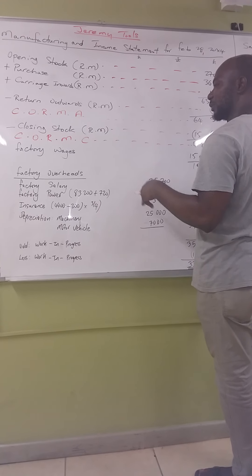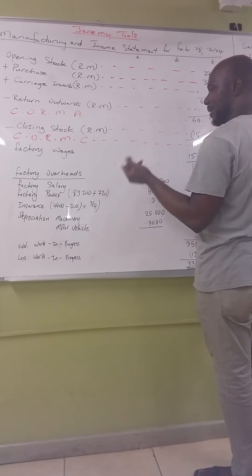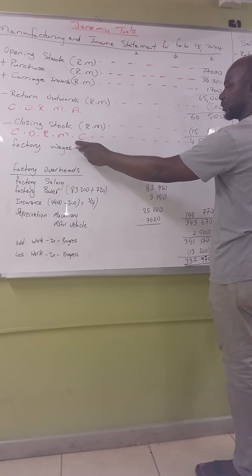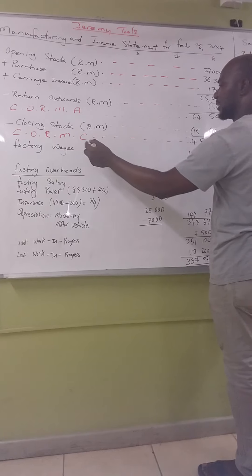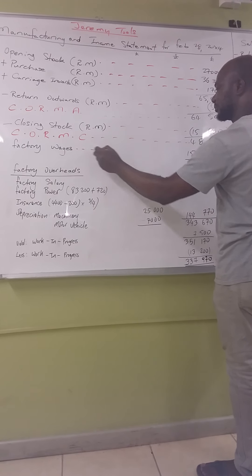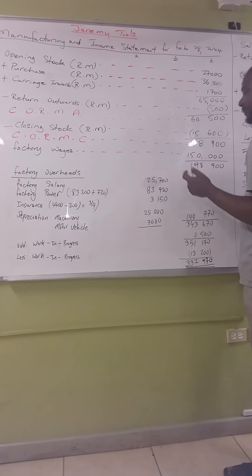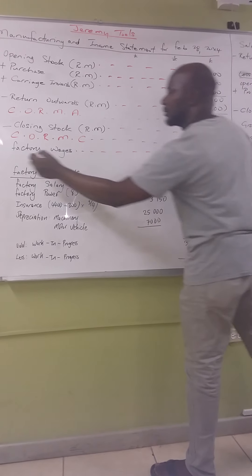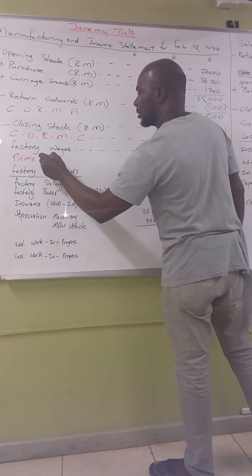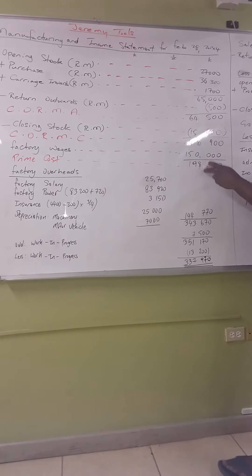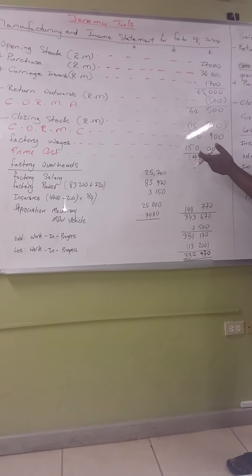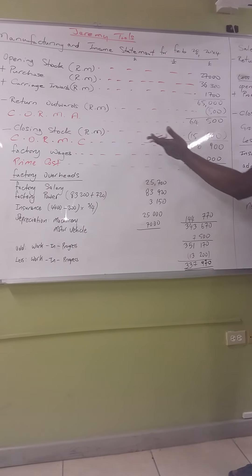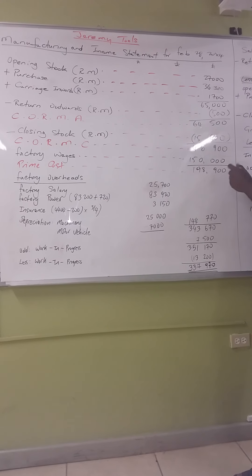Next we add direct labor and direct expense. In this question there was only direct labor, which we call factory wages — the portion that can be traced back to production. There were no direct expenses. Adding direct wages to direct material gives you a prime cost of 198,900.